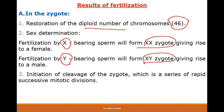Initiation of cleavage of the zygote means rapid division of the cells of the zygote to form a large number of cells, which will eventually form the embryo.